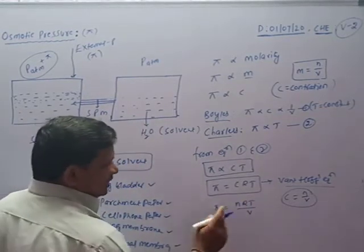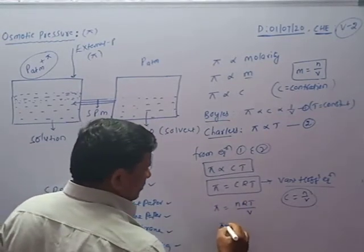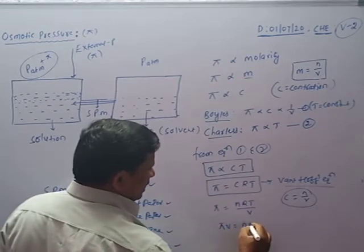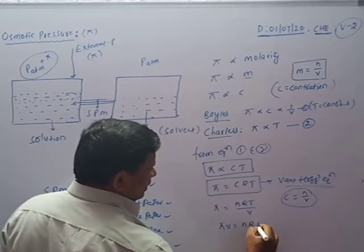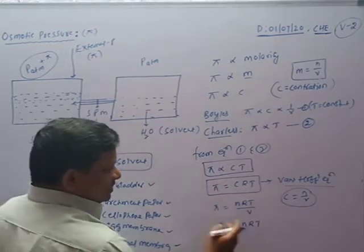Rearranging the equation, pi into V gives us pi V equals nRT.